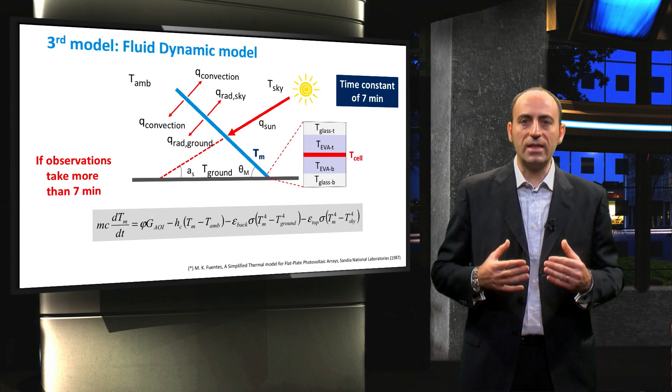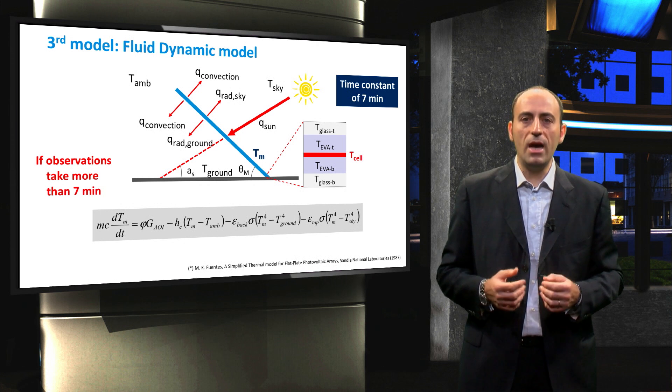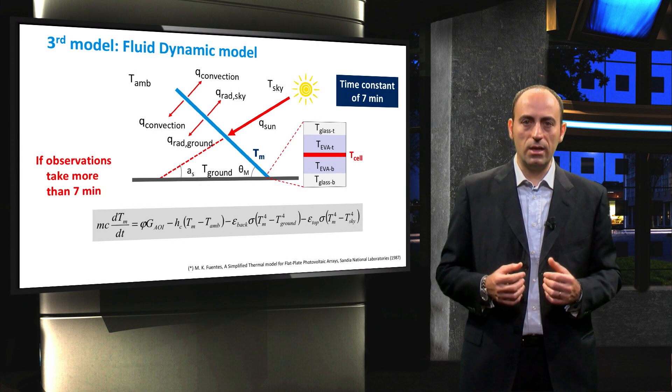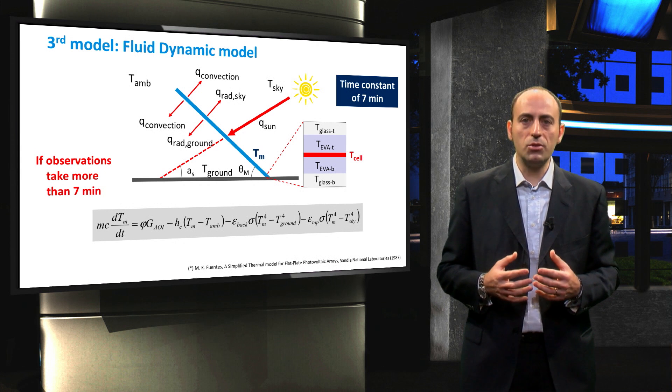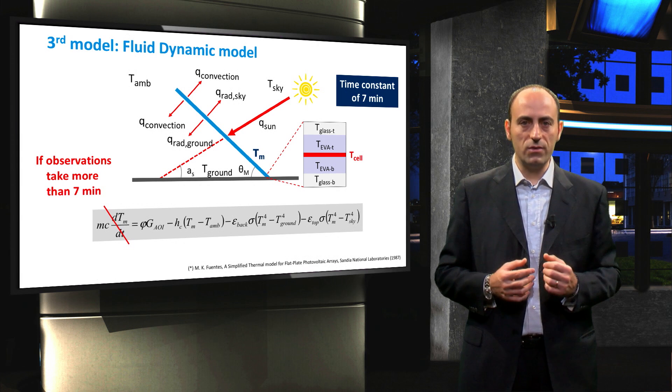As a consequence, for time steps exceeding the time constant, for example 10 minutes, the module can be approximated to be in a steady state condition. This assumption allows to get rid of the differential term on the left hand side of the equation.